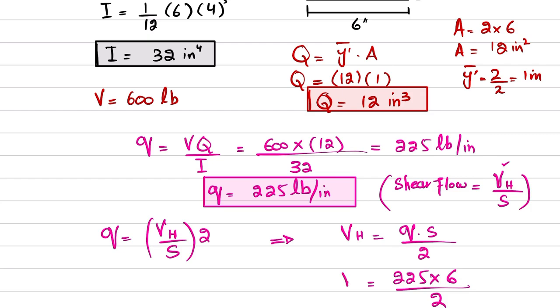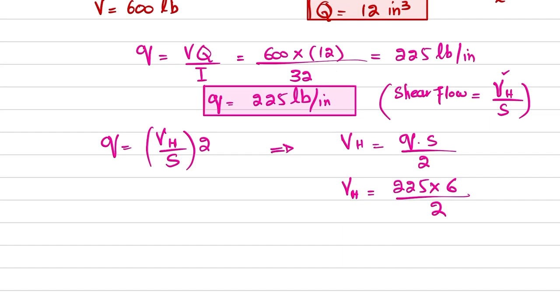So you can just put the value: q is 225, distance between nails is 6, divided by 2 will give you horizontal shear force that is resisted by nail. When you calculate it, you will get Vh equals 675 pounds.